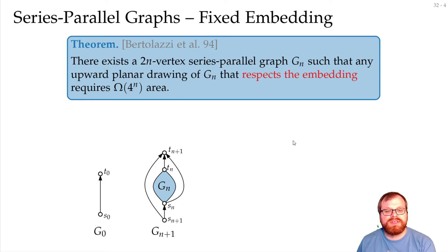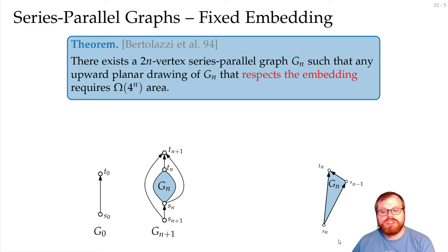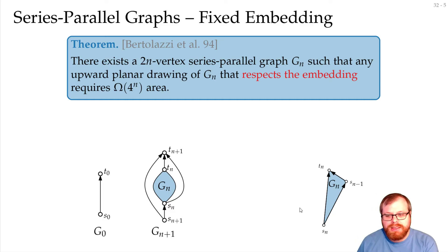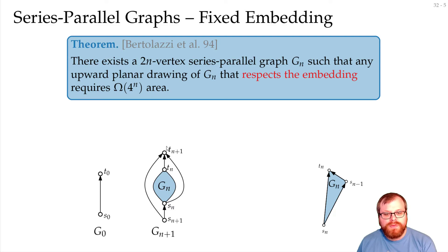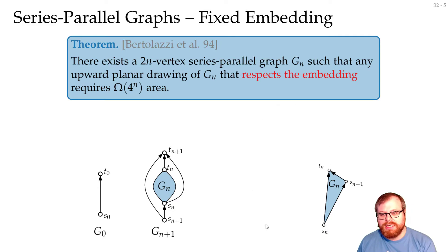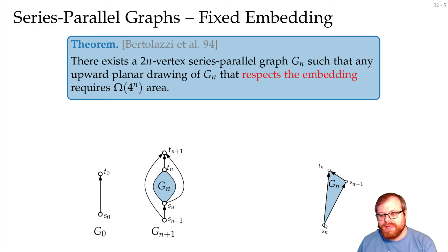Now how can we prove that this gives us exponential area? Let's assume we have drawn Gₙ in some area — it is a triangle. We must have some edge here, and we must have sₙ₋₁ to the right of that edge. Where can we place the two new vertices? The new sink has to be reachable from tₙ and from sₙ. All points reachable from sₙ have to lie to the right of the extension of this edge, and for tₙ it has to lie above the extension of this edge — so it has to lie in this area.